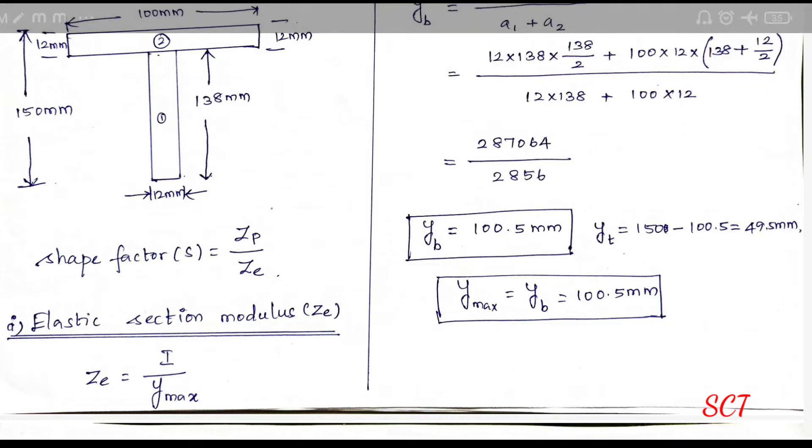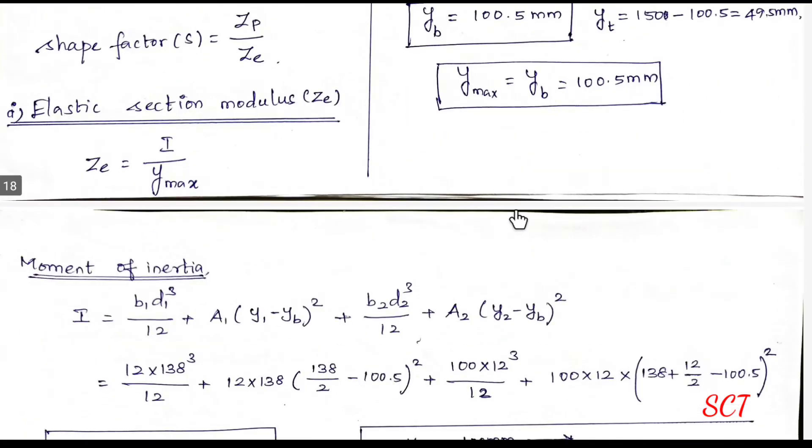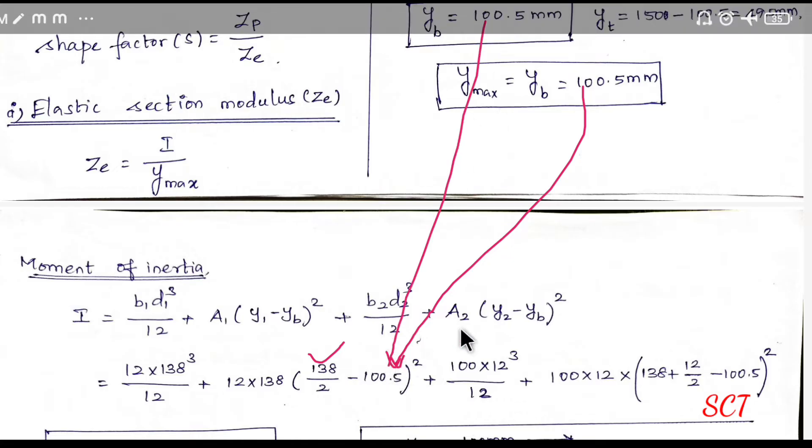Y1 is equal to 138 by 2. Y2 is equal to 138 plus 12 by two. Y1 times 8 and yb are equal to this. It is equal to A1. So, you can also substitute it.